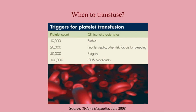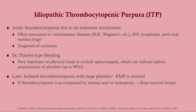Here is a general guideline for when to transfuse platelets in thrombocytopenia. Transfuse if the count is below 10,000. Transfuse at a higher threshold of 50,000 if surgery is planned. For neurosurgery or CNS procedures — due to the high risk and severity of bleeding — transfuse at 100,000.